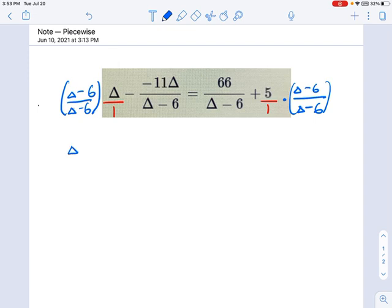So going from left to right, I have delta times delta minus six over delta minus six. Then I have a minus 11 delta. Let's just change that right now to a plus 11 delta over delta minus six. I don't really like looking at negative signs all over the place. And where they cancel out, I like to just cancel them out so we don't get lost later on.